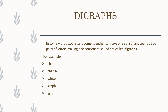In 'ship,' SH together gives one sound. In 'change,' CH together gives one sound. In 'white,' WH gives one sound. In 'graph,' PH gives one sound, which is the F sound. In 'sing,' NG together gives one sound. So if two letters come together to make one consonant sound, these are called digraphs.